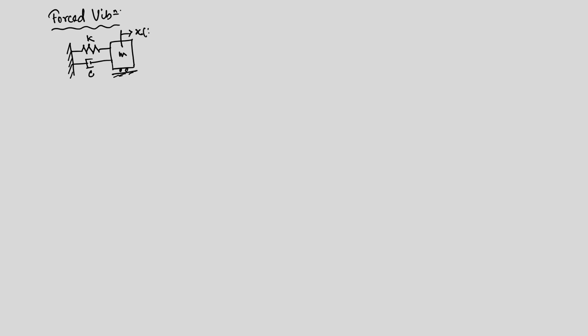Let us continue our discussion on forced vibration. If you recall, we solve the problem when we have a mass-spring-dashpot system and we excite that with a harmonic force. The system has stiffness, a damping constant, and a mass, and we apply a force causing displacement X of T. The force is F of T and the equation of motion is M X double-dot plus C X-dot plus K X equals F of T.